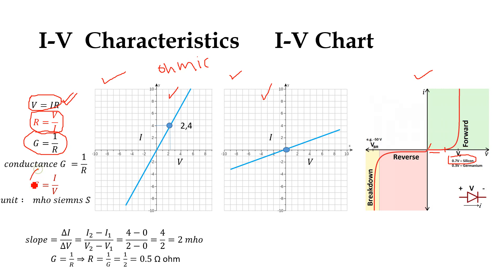So in the resistance case it is V divided by I, but for conductance we get the value of current divided by voltage. Conductance means how much current a circuit or a conductor can conduct, which is the opposite of resistance.